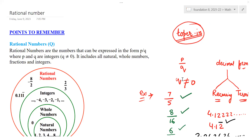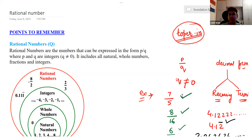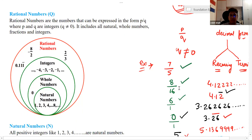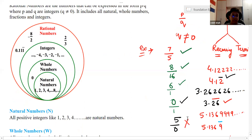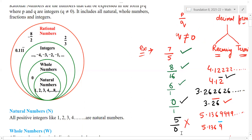For example, 7 by 5 — is it a rational number? Yes. 8 by 6? Yes. 6 by 1? Yes. 0 by 1? Yes. 5 by 0? No — of course, the denominator is 0, so it cannot be a rational number.